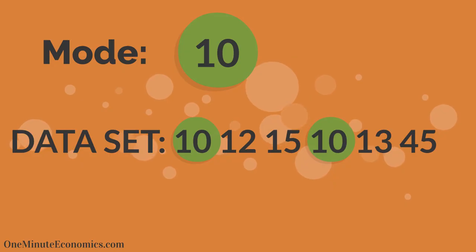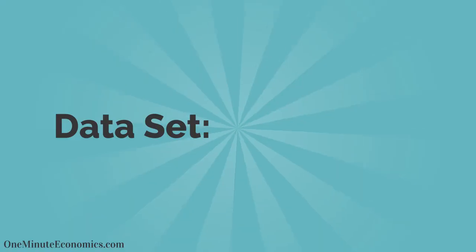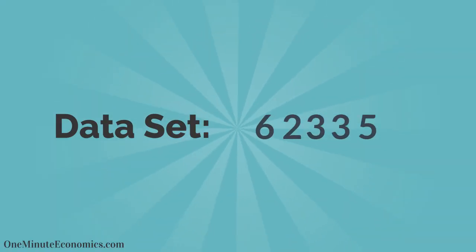The mode is simply the value that occurs most often in a dataset. Let's say we have a dataset that consists of the following numbers: 6, 2, 3, 3, 5, 7.